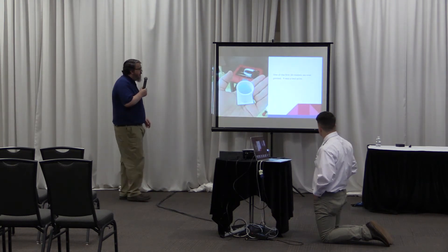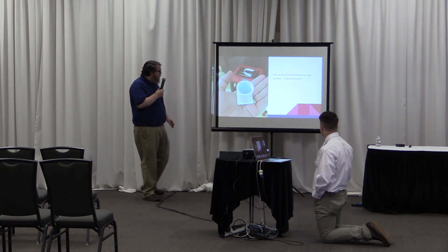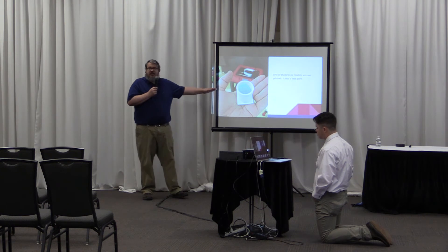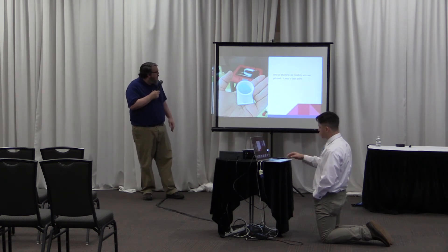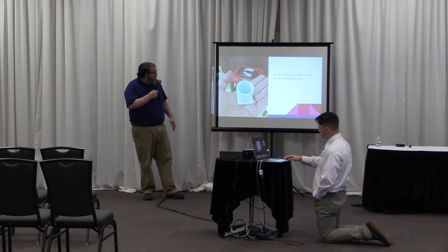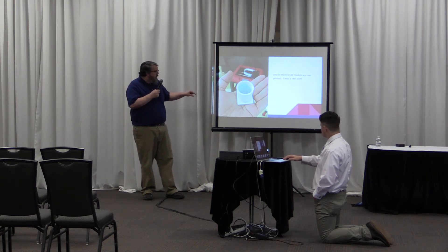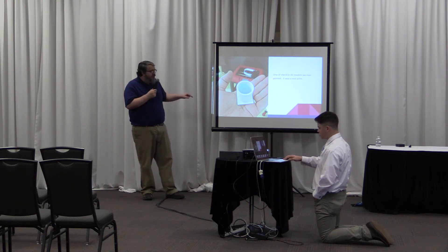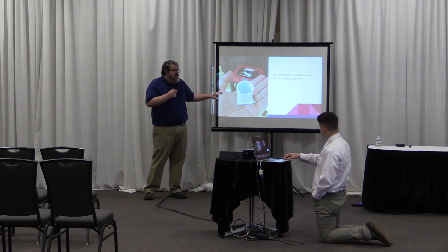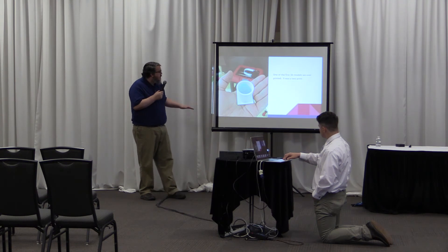This was the first thing we printed — a test print. I was amazed because I had never made anything with a 3D printer before. You take this little wire that looks like a weed eater string, and it melts it in tiny, tiny layers at about 420 degrees, and it solidifies almost instantly. I had one kid who was worried — he said, 'If I touch it, will it burn me?' And I said no, it cools off almost instantly.